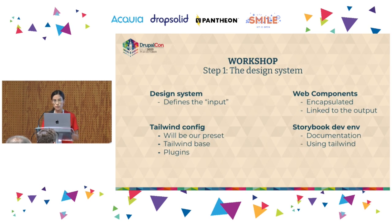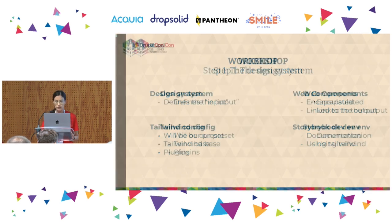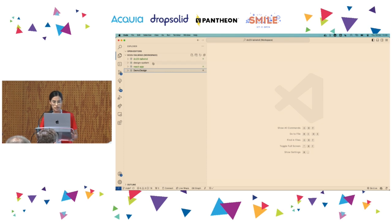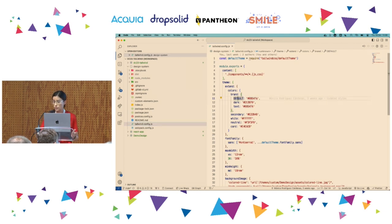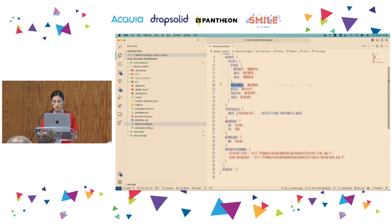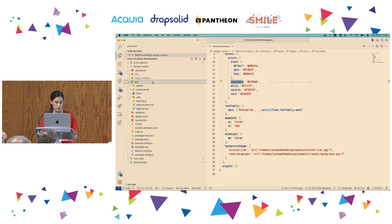The design system defines all the input — the base for every project. It has atomic design components and the same Tailwind config we use and extend in other applications. It also contains the web components with encapsulated styles linked to the output CSS. In the design system folder, the Tailwind config customizes things like a default brown color, a secondary color, custom font families, and even background images for some paragraphs.